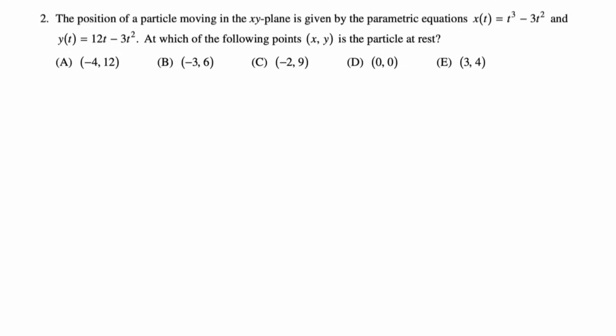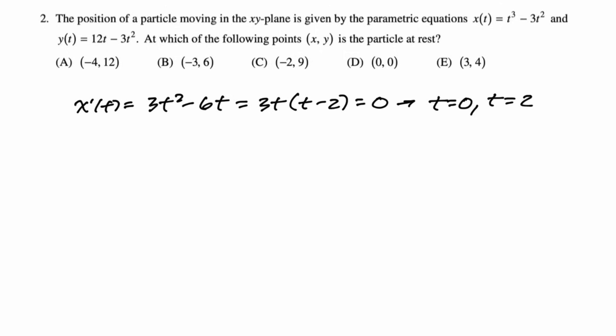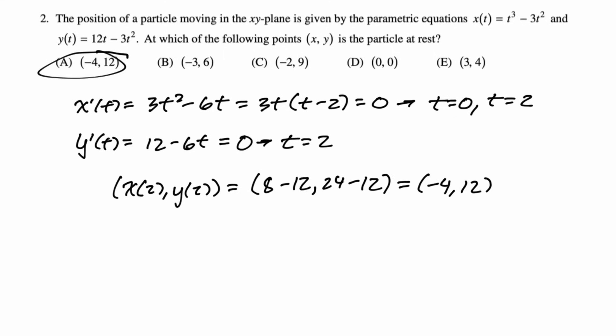Number two: the position of the particle is given by X of T and Y of T. When is the particle at rest? We need to know when dx/dt equals zero. So 3t² − 6t, factor that: 3t(t − 2) = 0, giving t = 0 or t = 2. We also need dy/dt: that's 12 − 6t = 0, giving t = 2. So t = 2 is the answer. Plug into both positions: you get −4 and 24. The −4 is enough — answer is A, (−4, 12).